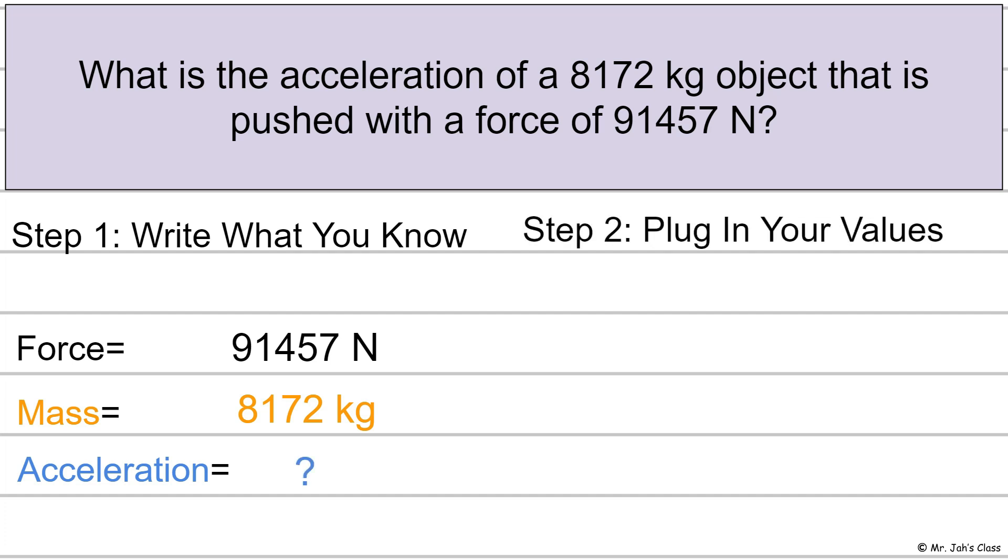And then let's go ahead and plug in our values to the equation. The equation for Newton's second law is force is equal to mass times the acceleration. So we have the force, so we're just going to go ahead and substitute it. So it goes right there. And then the mass is going to go right there.